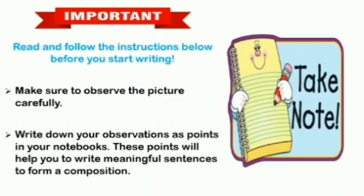Secondly, write down your observations as points in your notebook — these points will help you write meaningful sentences to form a composition. To make your work easier, write down one word about things in the picture. For example, if it's a birthday party, write 'birthday party', then write 'cake', 'children', 'decorations' — just one word or phrases in your notebook. This helps you notice everything in the picture and those points will help you form sentences.